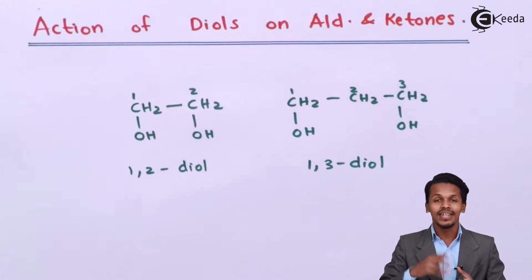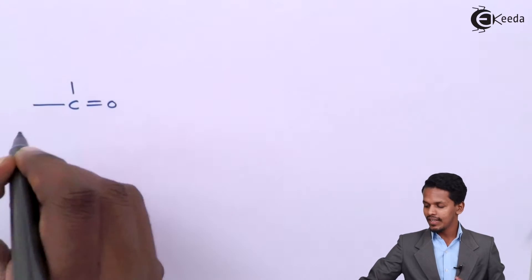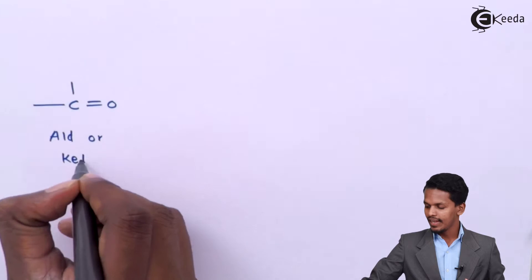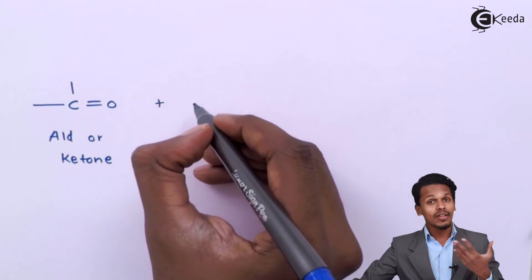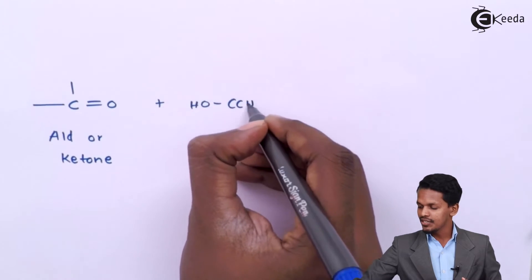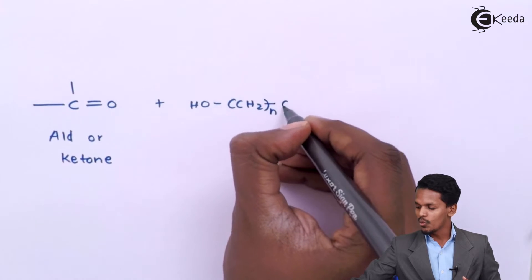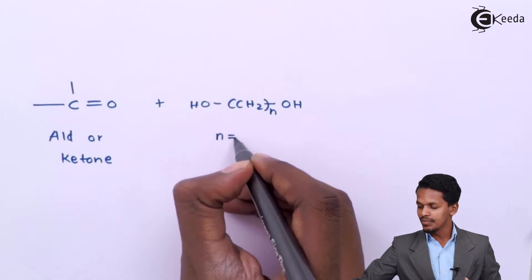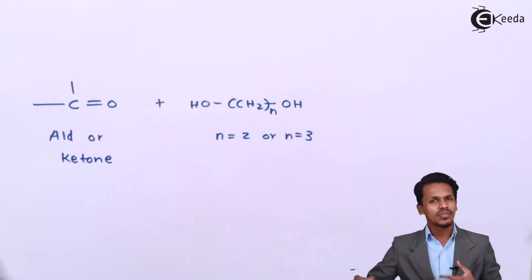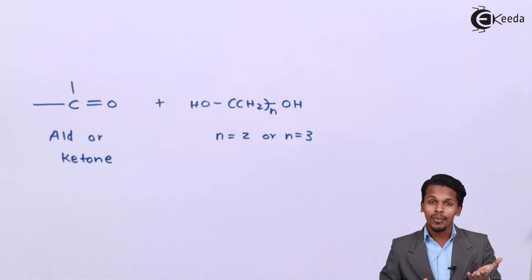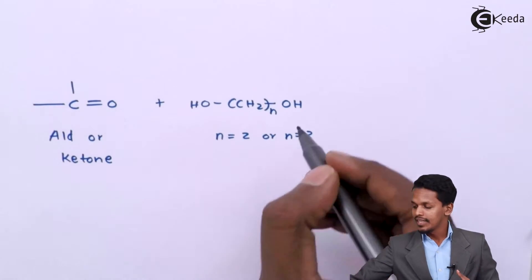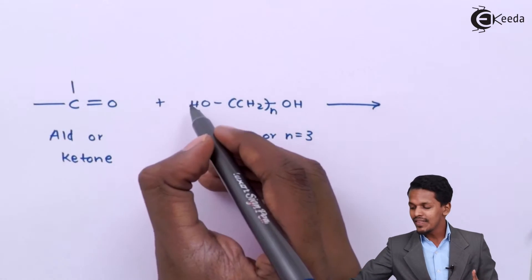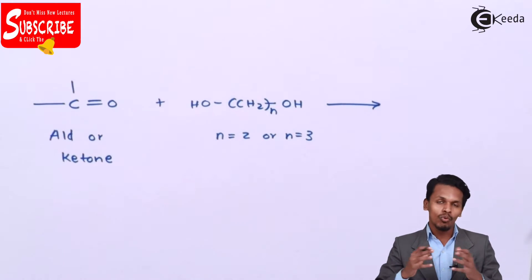Now let us talk about the general reaction of diols on aldehydes and ketones. If we consider an aldehyde or a ketone — which contains a carbonyl group, C double bond O — and it reacts with a diol represented as HO-(CH2)n-OH, where n equals 2 or 3 for a 1,2-diol or 1,3-diol respectively, then H and O are removed as water.